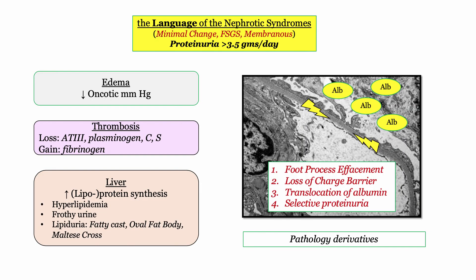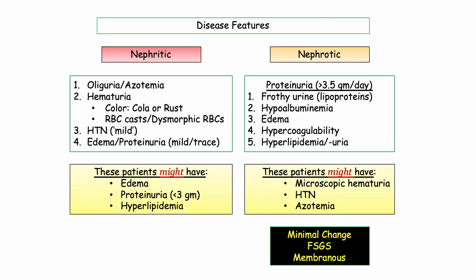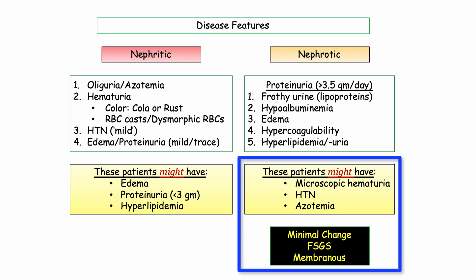We'll pick up our discussion with a reminder of how the patient with nephrotic syndrome presents, including heavy proteinuria and the clinical manifestations that result from protein loss — including edema, thrombosis, hyperlipidemia, and lipiduria. In our previous video, we also contrasted the features of nephritic versus nephrotic syndrome. But I need to highlight that the patient with nephrotic syndrome might also have hematuria, hypertension, or renal insufficiency, especially with focal sclerosis or membranous. The heavy proteinuria remains the defining feature.